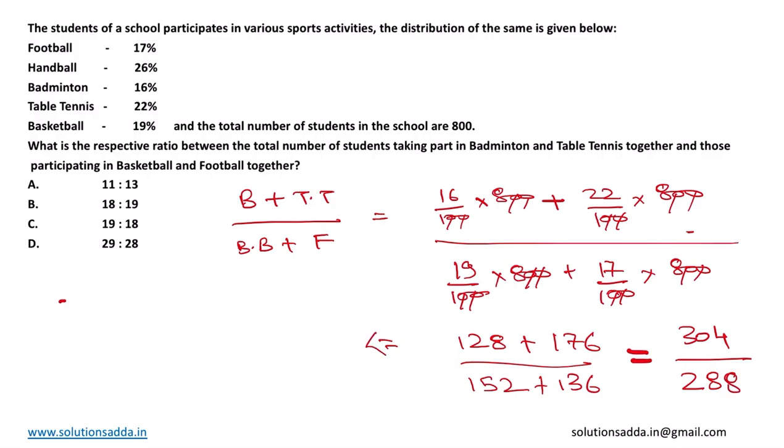The final ratio would be 304 divided by 288. While we cancel down with 4, it comes down to 76 upon 72.